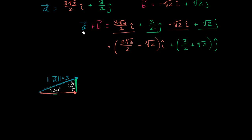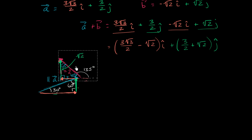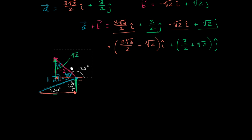In the last video, we were able to figure out what vector a plus b is from a component point of view. If we visualize that, that's vector a, and let me paste vector b here. Let me clean this up a little bit so that we can see a little bit clearer.